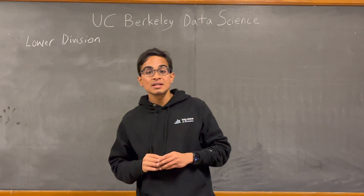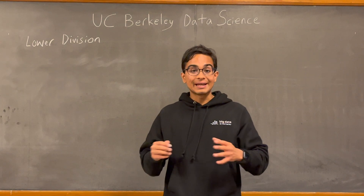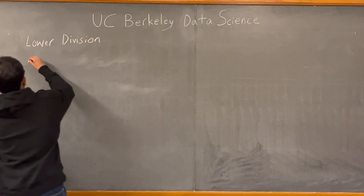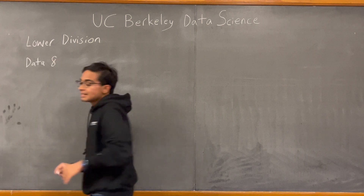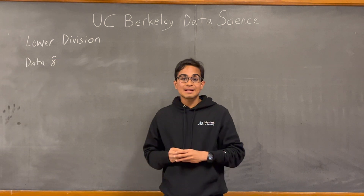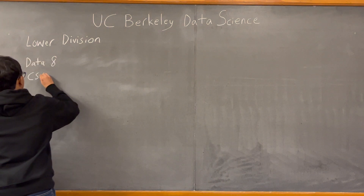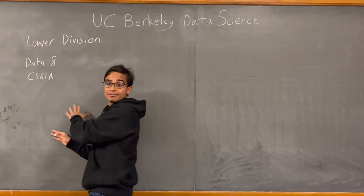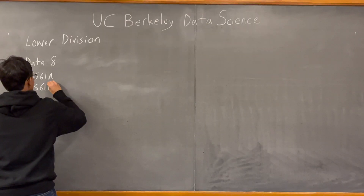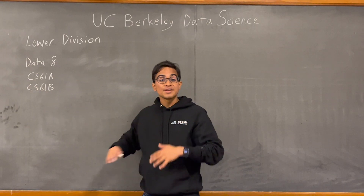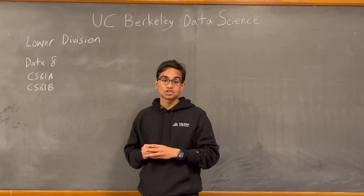As part of the Lower Division requirements, there are some classes that you must take. Firstly, Foundations of Data Science, or Data 8. This is an introduction to data science and covers Python. Secondly, CS61A and CS61B. These are computer science classes and are generally, for data science majors, the most challenging of the lower division requirements.